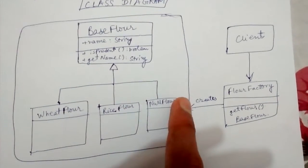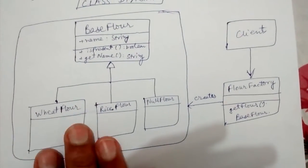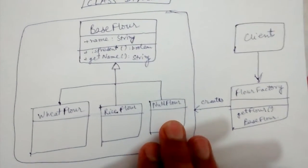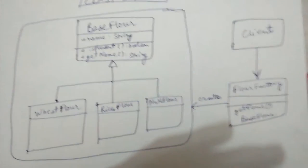These three classes extend from BaseFlour: we have WheatFlour, we have RiceFlour, and we don't have any other flour. If the user asks for any other flour, we have kept this NullFlour as a placeholder.